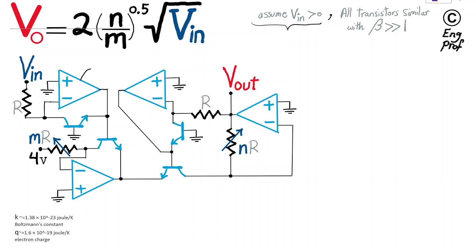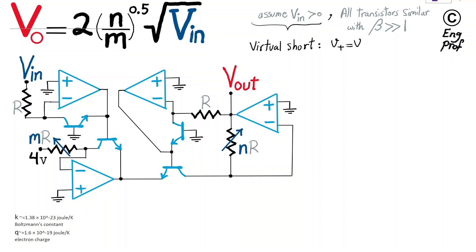Let's also assume that the op-amp supply voltages are properly applied and op-amps are properly biased so that they are operating in the linear region. As a result, they are not saturated, and I can make the assumption that virtual short is valid for all op-amps, which means that the voltage at the positive input terminal equals the voltage at the negative input terminal for each op-amp.